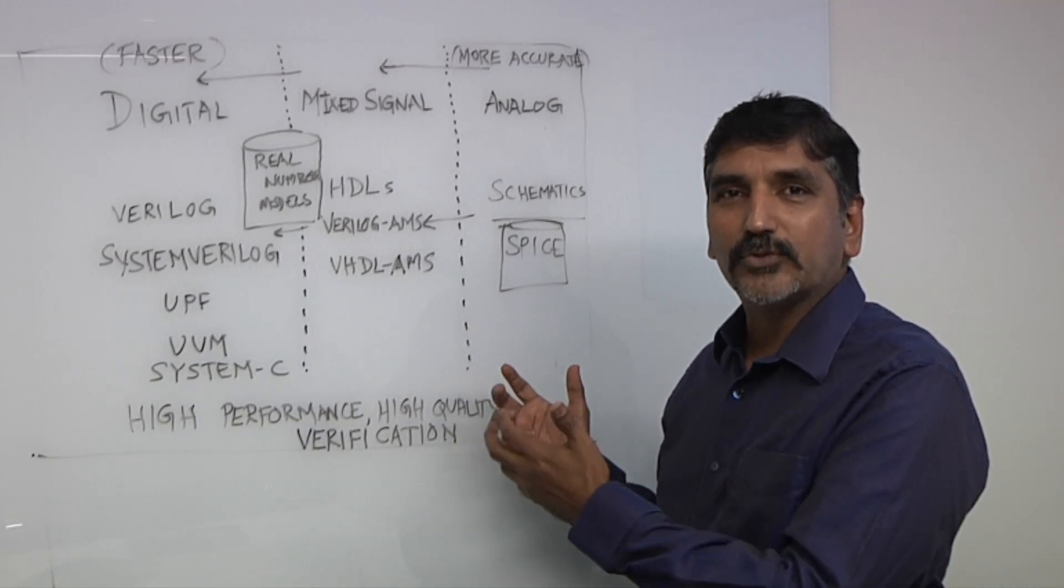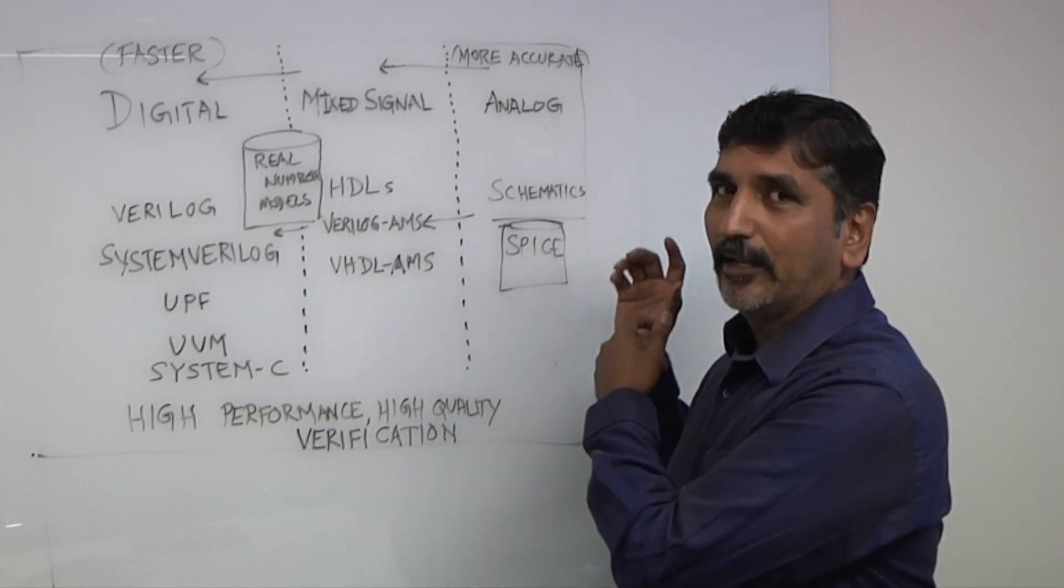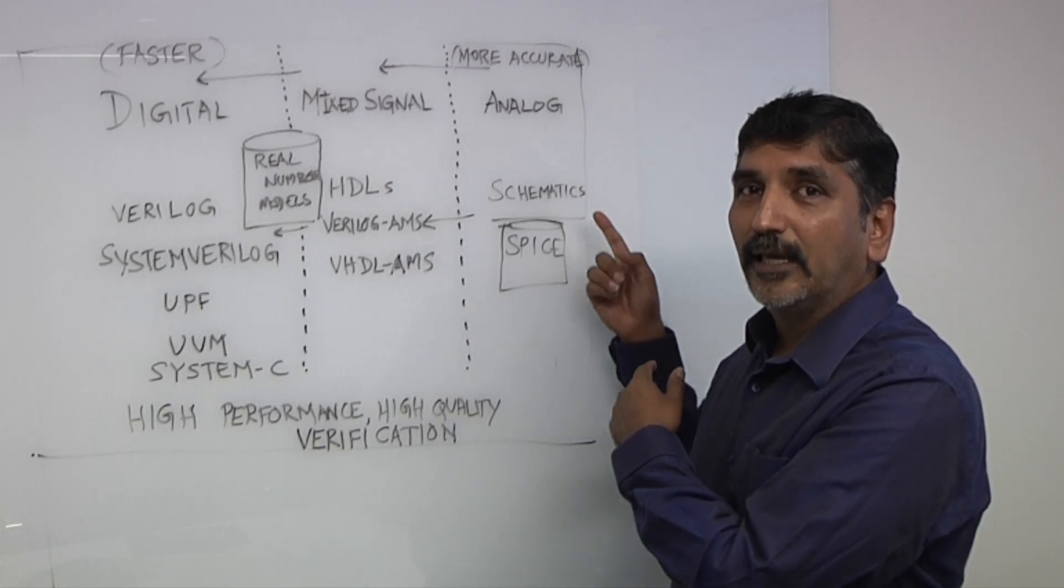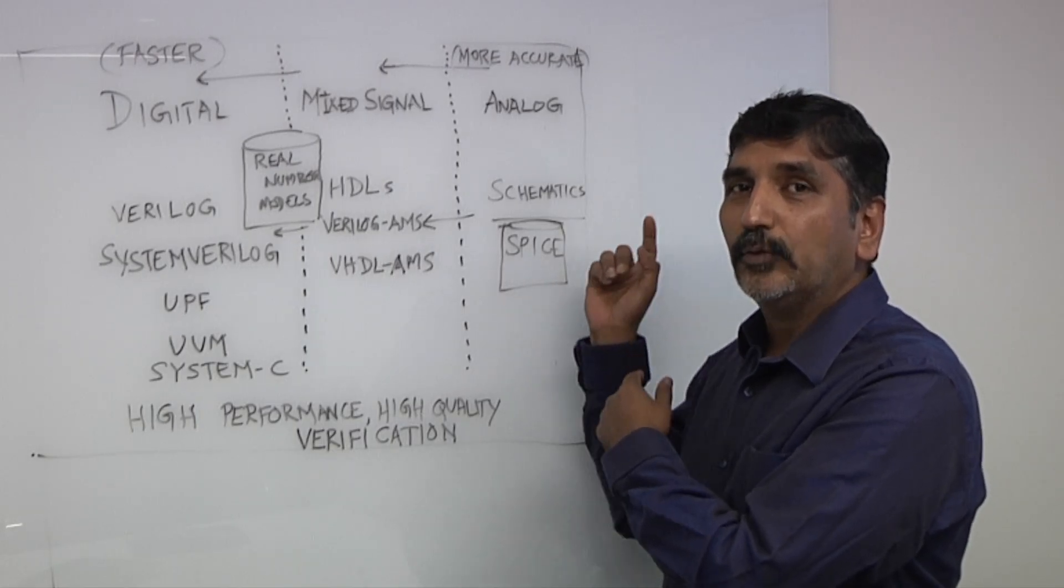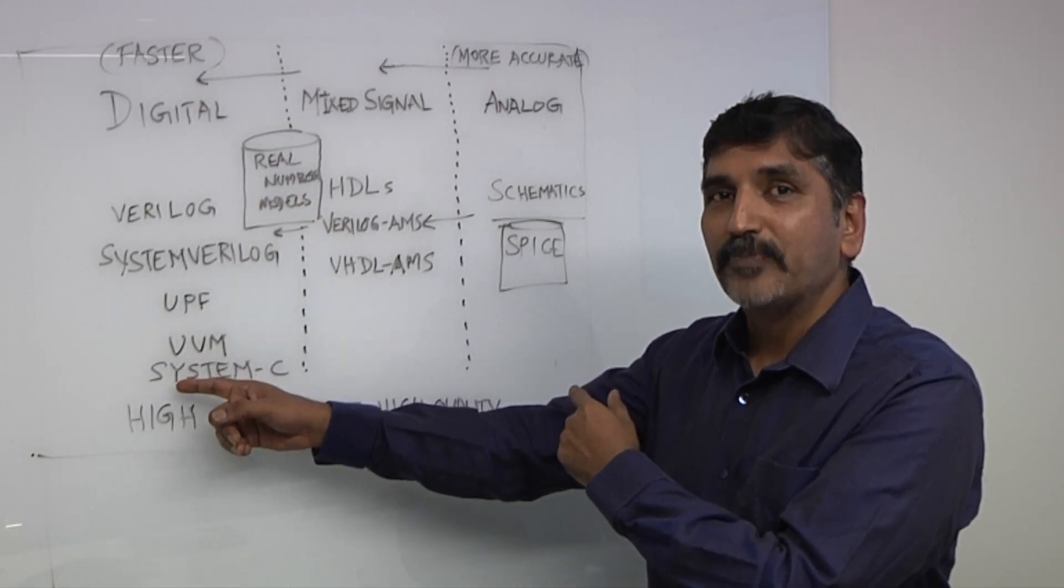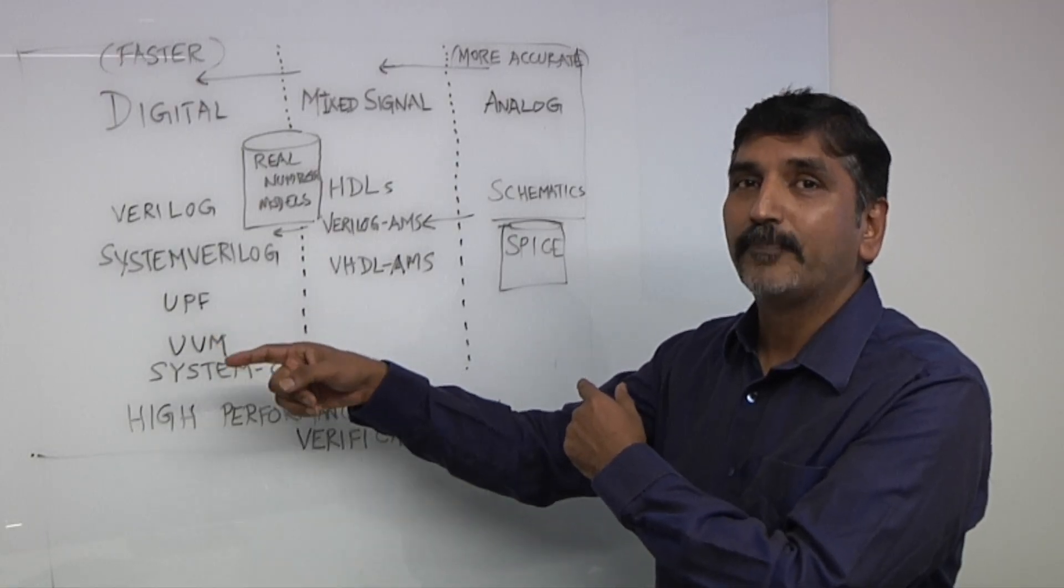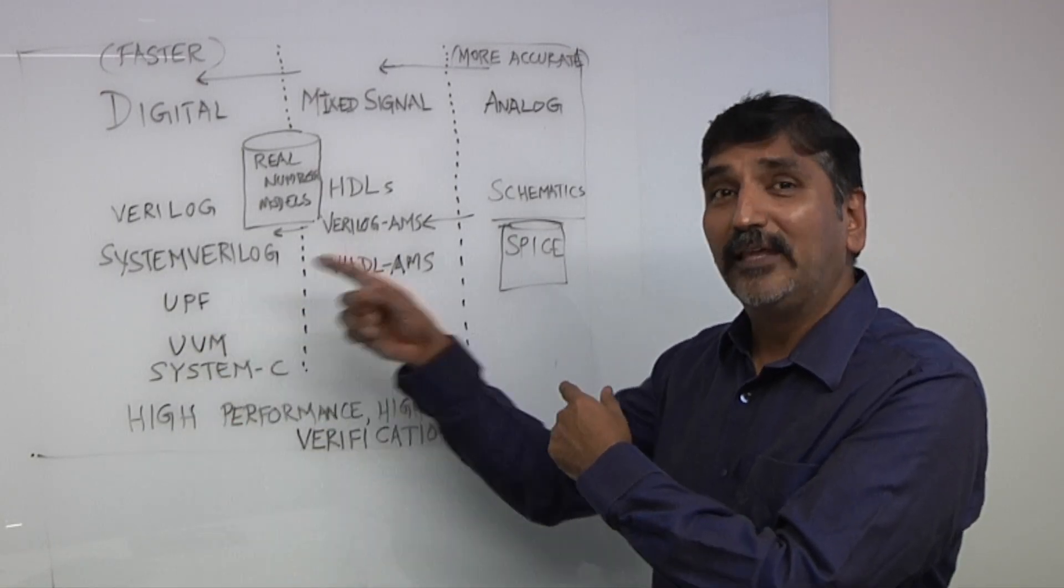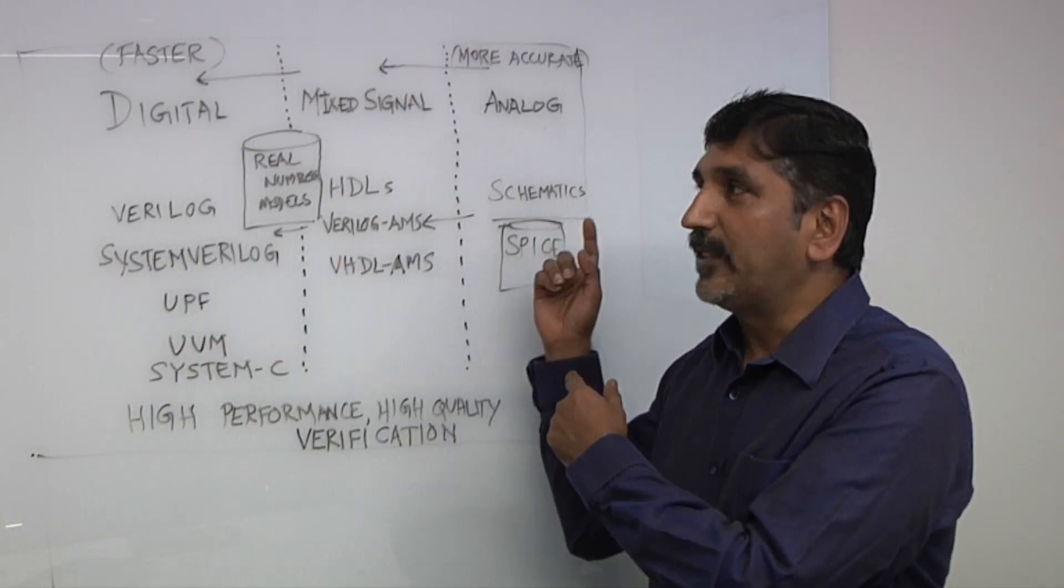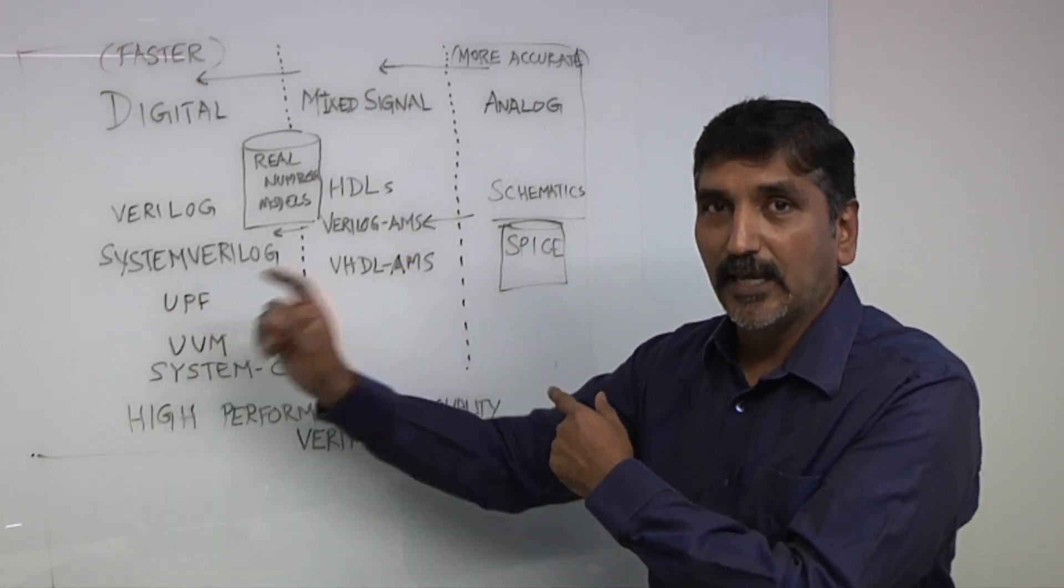Let's look at what happens today when users have to verify their chips. You have analog users in their analog environment verifying their schematics using SPICE simulation, and then you have digital users who are running digital simulations at a top-level chip, and they have all kinds of other abstractions they have to bring in, like low power or verification methodologies like UVM.